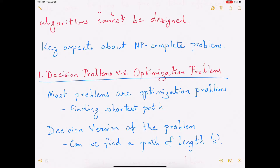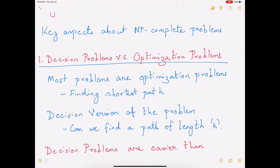What is an optimization problem? For example, say you're trying to find the shortest path in a graph — the shortest path between two pairs of nodes. That is an optimization problem. What is the decision version of the same problem? The decision version is: can we find a path of length k? Is there a path of length k between these two nodes in this particular graph? The answer is yes or no. And is there a path that is equal to k or less than k in this particular graph?